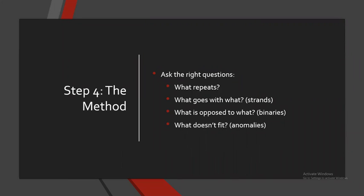Step four — this is what we'll spend the most time on. Step four is the method. What the method is: you're asking of a piece — a text, image, or video — four questions. What repeats? What goes with what? What is opposed to what? And what doesn't fit? The first two are perhaps the most important. What repeats? You're looking at a text, image, or video, and the same images and words keep coming up over and over again. At some level this is about those words or images — we need to figure out what they're representing. So what's repeating is what's important.